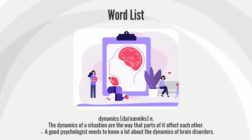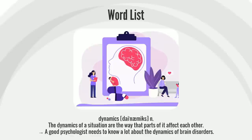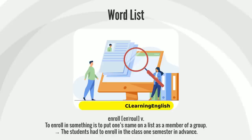The dynamics of a situation are the way that parts of it affect each other. A good psychologist needs to know a lot about the dynamics of brain disorders.